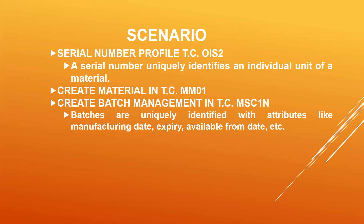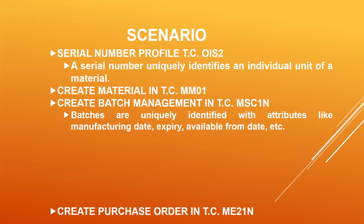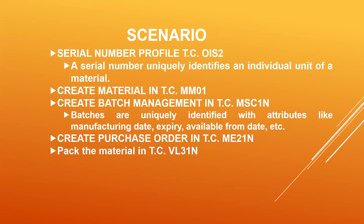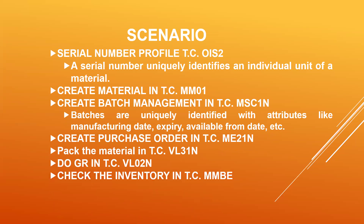Batches are uniquely identified with attributes like manufacturing date, expiry date, available from date, etc. Now I am going to create a purchase order using ME21N transaction code, pack the material in VL31N, and do goods receipt in VL32N. Finally, I am going to check the invoice and do invoice verification.